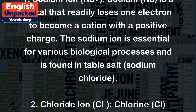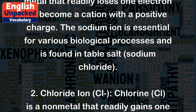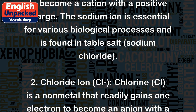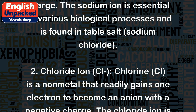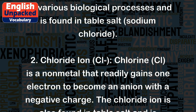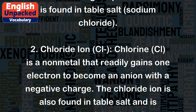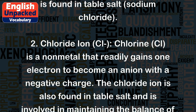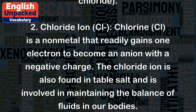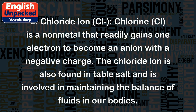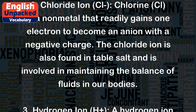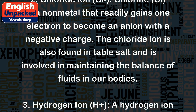2. Chloride ion (Cl−): Chlorine is a nonmetal that readily gains one electron to become an anion with a negative charge. The chloride ion is also found in table salt and is involved in maintaining the balance of fluids in our bodies.